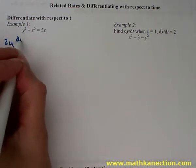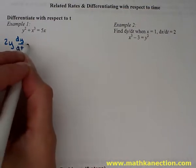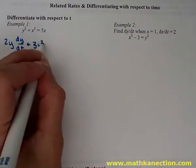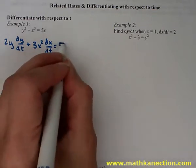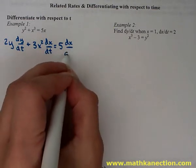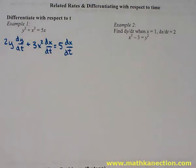Derivative of y squared is 2y, derivative of y with respect to time, so dy/dt, plus derivative of x cubed is 3x squared, derivative of x with respect to time, so dx/dt, and then is equal to derivative of 5x is going to be 5, again, derivative of x with respect to time, so dx/dt.